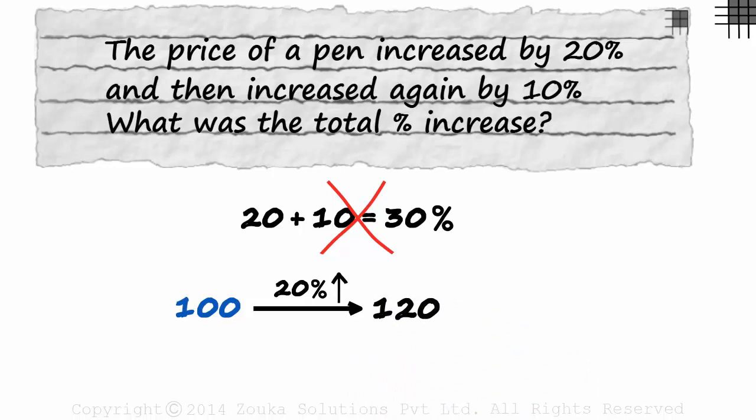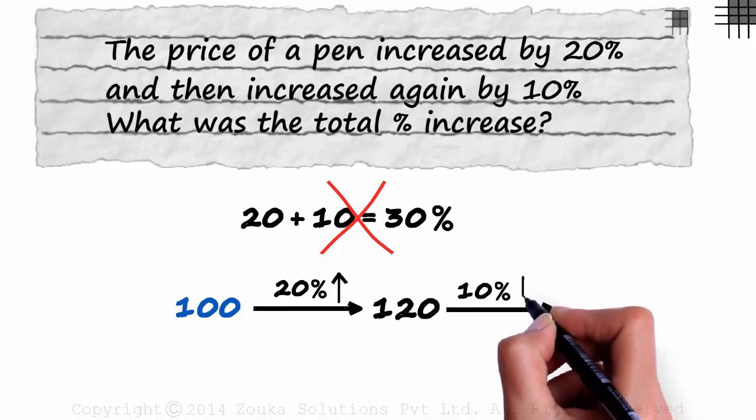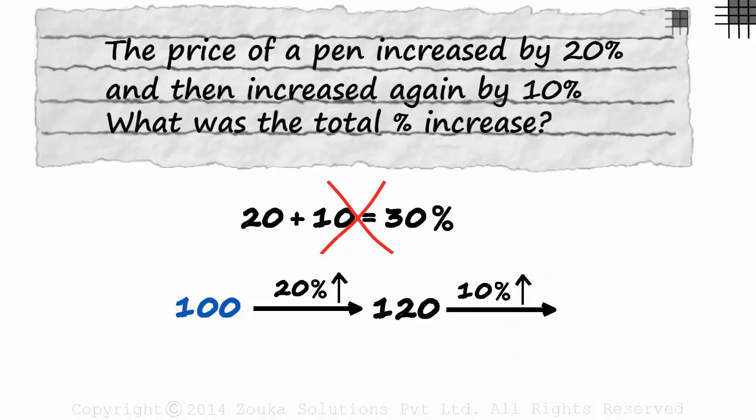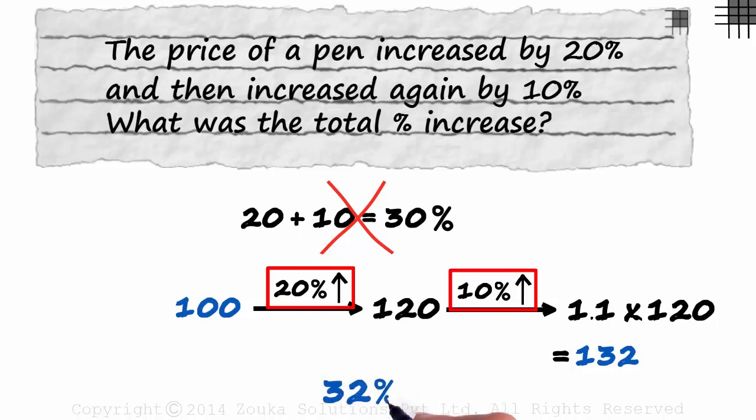That gives us 120. Now let's increase this 120 by 10%. The result will be 1.1 times 120.